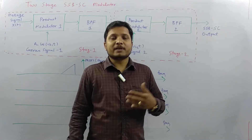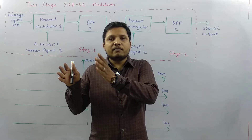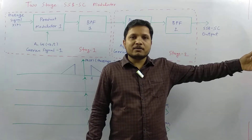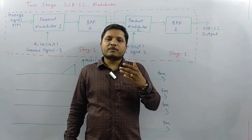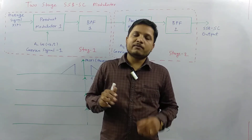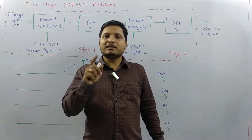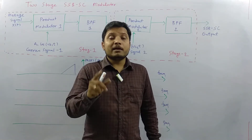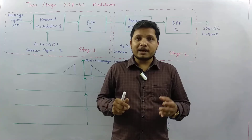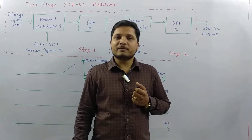We can reduce the cost of the circuit by bisecting the modulation process into two parts. In the first stage, we translate the frequency of the modulating signal, and then in the second stage we further translate that signal, so the overall cost of the system is reduced. That is the basic agenda behind the two-stage SSBSC modulator.